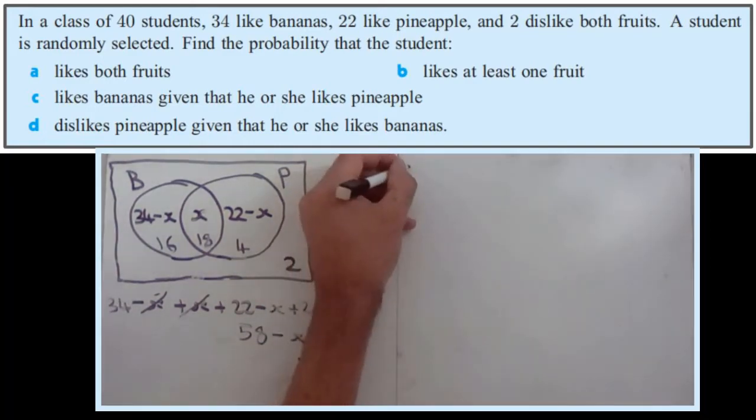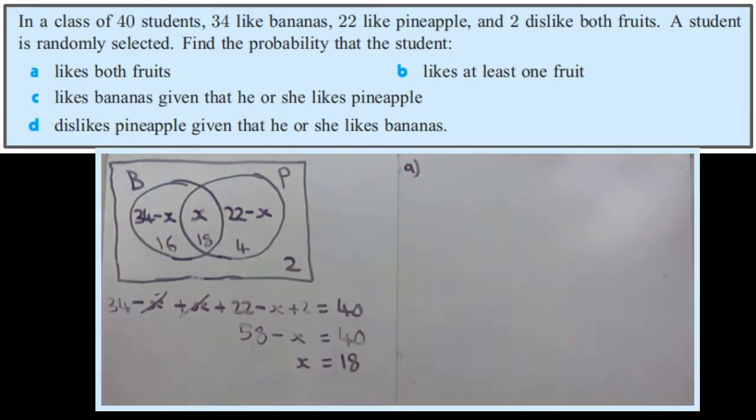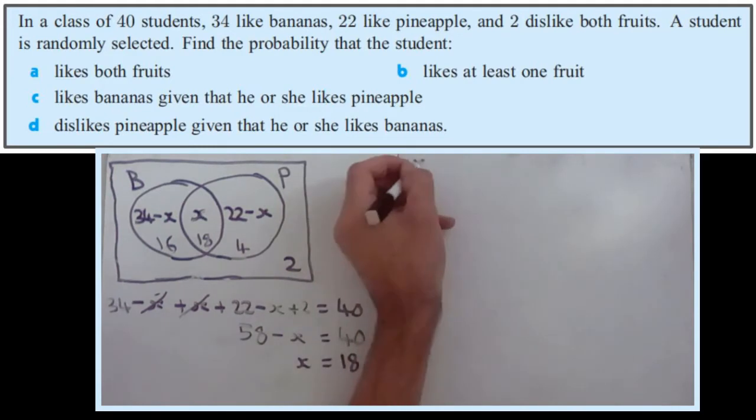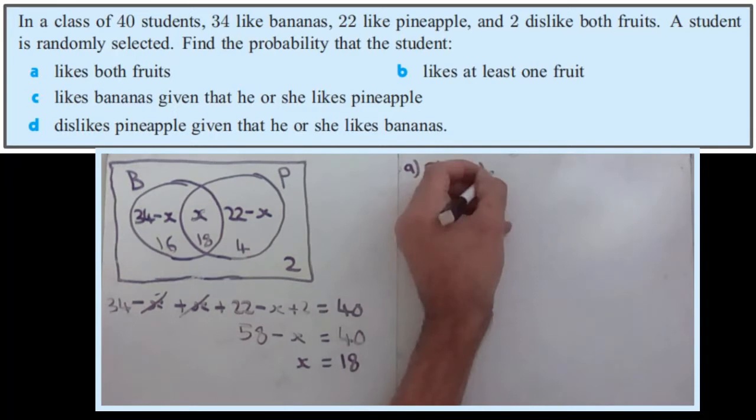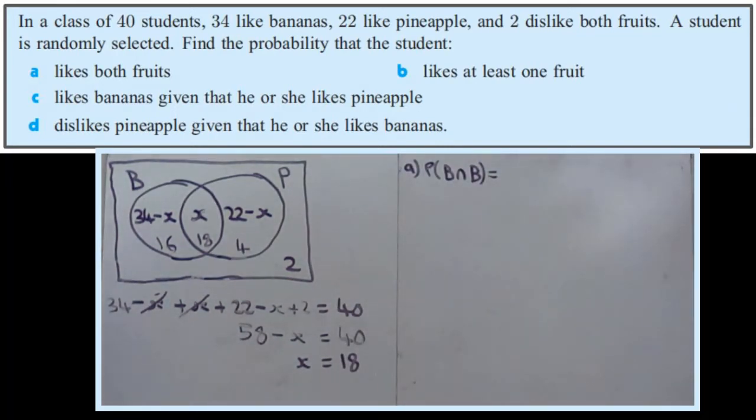So question A was, find the probability they like both. So we're finding probability bananas and pineapples, so we're looking for the intersection. Remember, general theoretical probability is the number of favorable outcomes, e.g., the number of outcomes involving this thing being true, over the total number of possible outcomes.